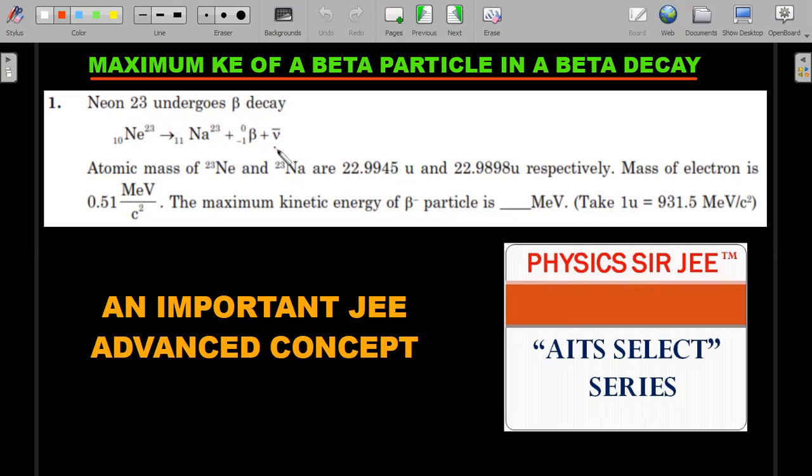Neon-23 undergoes a beta minus decay. The equation for the decay is given and it produces a sodium isotope. Atomic masses of neon and sodium are respectively these numbers. You can see the significant digits mentioned. Mass of electron, the beta minus particle which is nothing but an electron, is given in MeV/c² units. The maximum kinetic energy of the beta minus particle that is emitted is how much? This u, the standard atomic mass unit conversion factor, is 931.5 MeV/c².